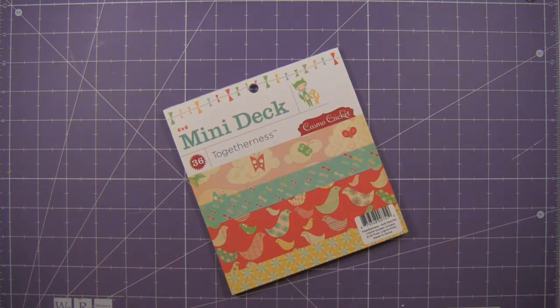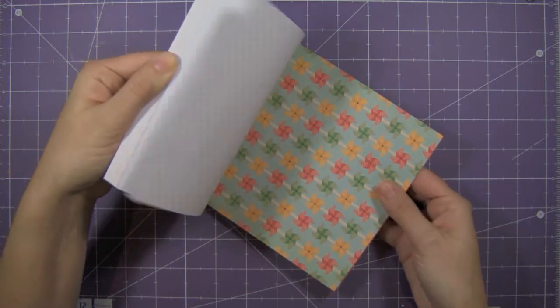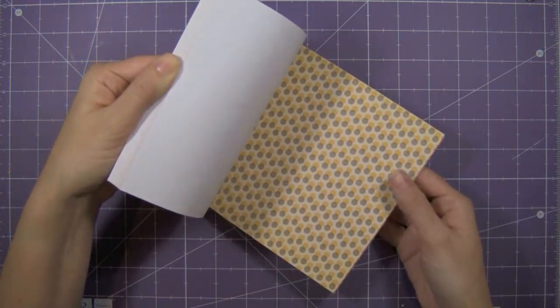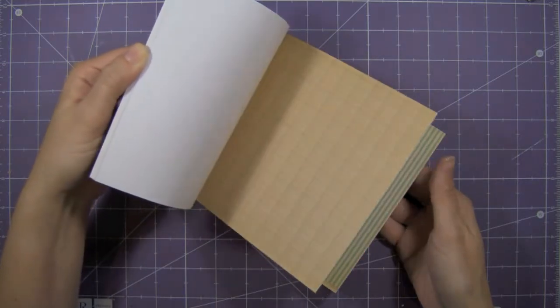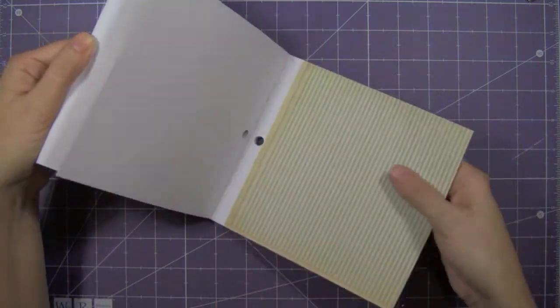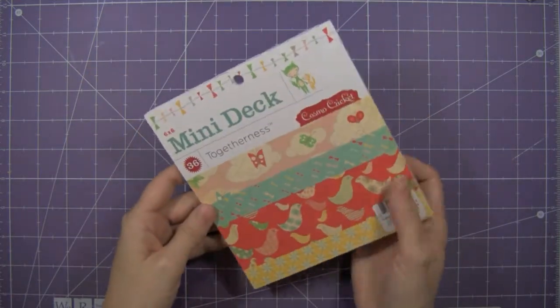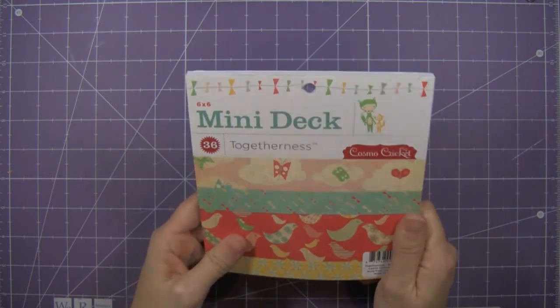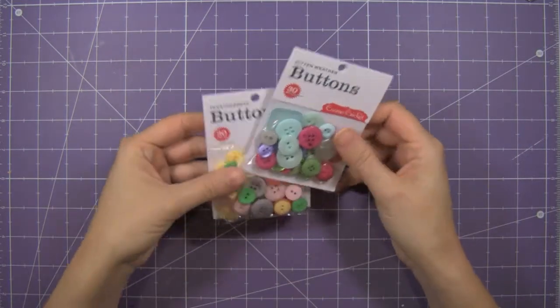Another one that I got to play with is the Togetherness paper pad by Cosmo Cricket. Again, these are nice muted, they're not too bright, they'll go well with craft, which I love. Just some fun colors, fun patterns, I love this.